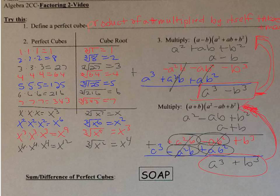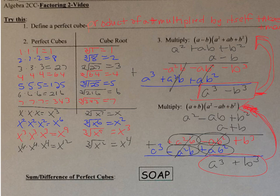Notice the sign pattern: for the difference, the first sign in the factored form is the same as the original sign, the next sign is opposite, and the last sign is always positive. The same pattern applies to the sum: same, opposite, always positive. This will always happen.